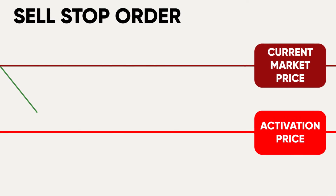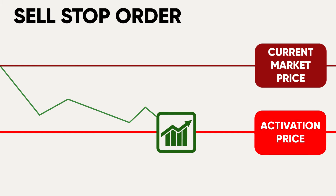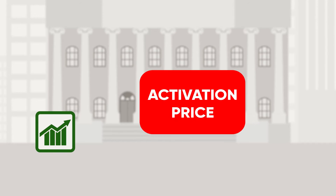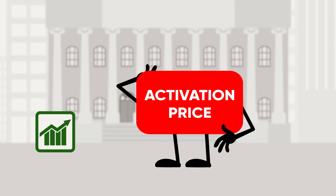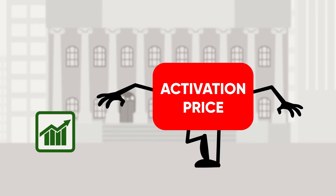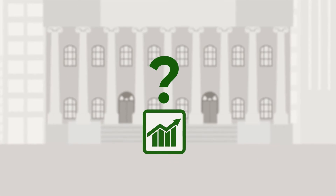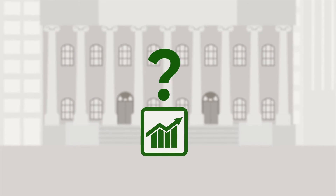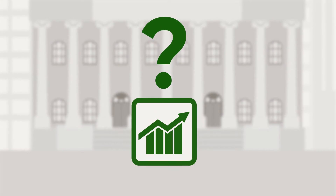Contrary to a buy stop order, a sell stop order is used to limit potential losses when the stock's price is trending downwards. Once the stock's value falls below the current market price and reaches the activation price, it triggers the sale of this no longer desirable stock. You're getting out as soon as possible before a stock falls too low. This is where the name stop loss order starts to make a bit more sense.